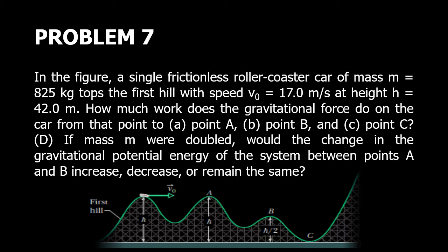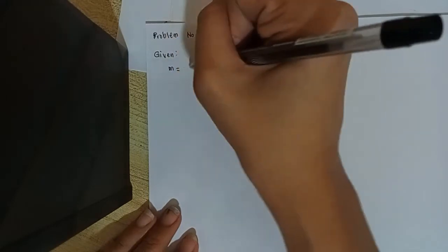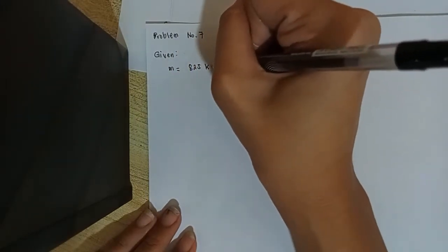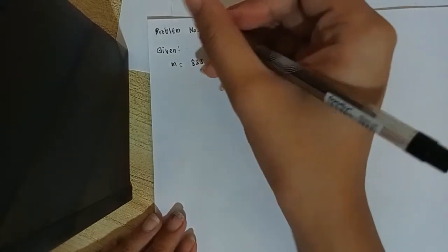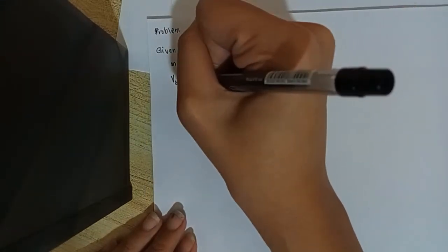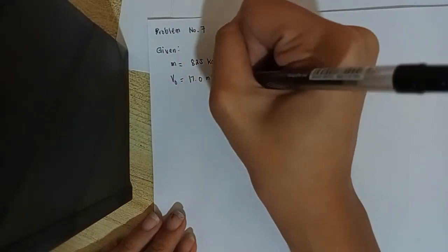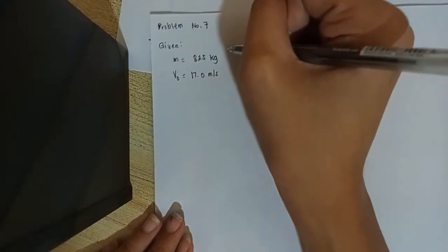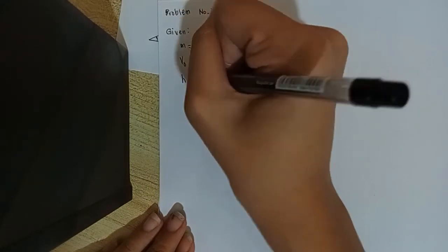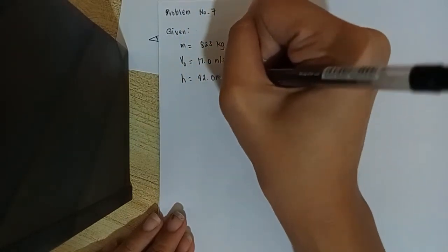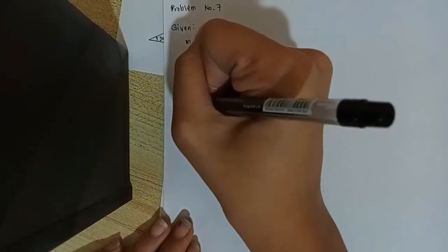On letter D, if the mass m were doubled, would the change in gravitational potential energy of the system between points A and B increase, decrease, or remain the same? How will we solve for those? So we will now solve for problem number seven by first listing our givens. The mass of our roller coaster car is 8.25 kilograms, v_0 is 17.0 meters per second, and our height is 42 meters.